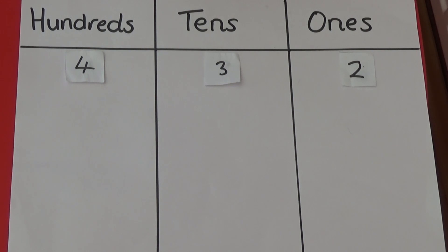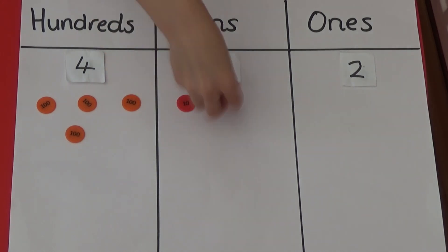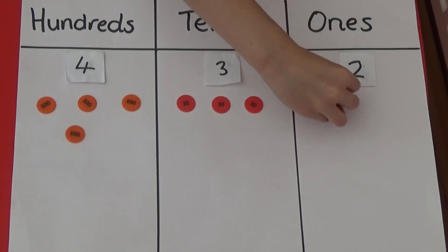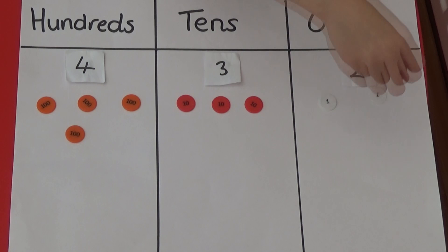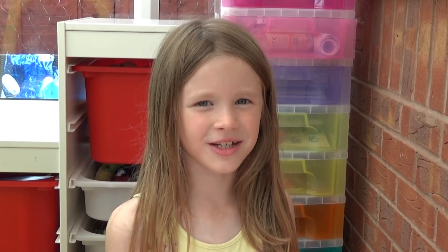The number this time is 432. I need four hundreds to represent the four hundreds, three tens to represent the tens, and two ones to represent the ones. In this number, the 4 has a value of 400 because it has four hundreds. We can also represent numbers using the part-whole model.